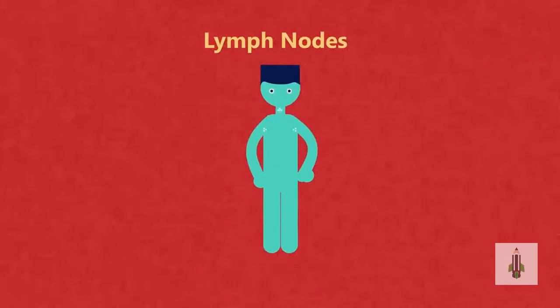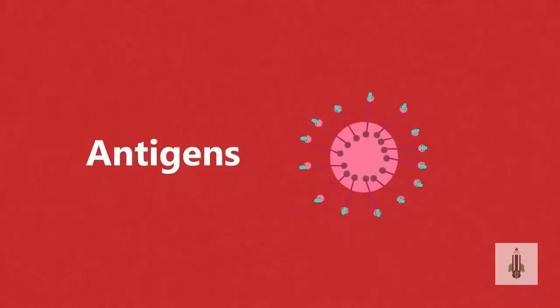Such as in your armpits and neck. Invading pathogens contain a chemical on their surface called antigens. The lymphocytes detect this...